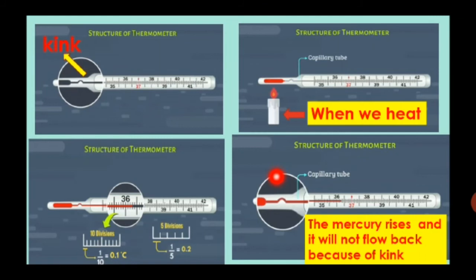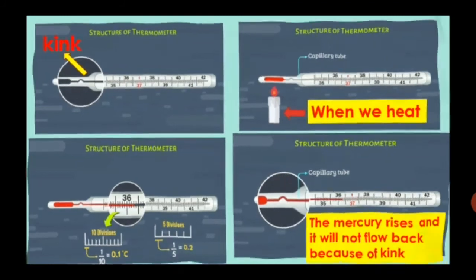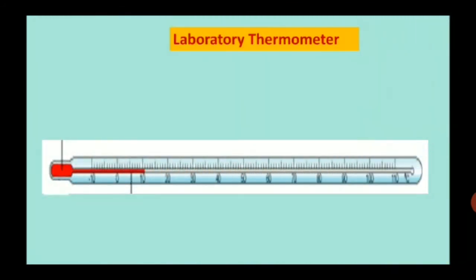So, the mercury rises and it will not flow back because of kink.